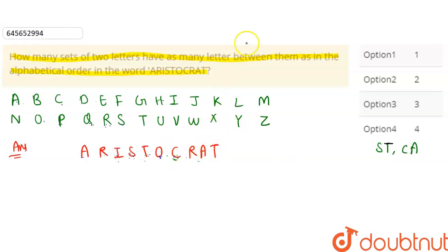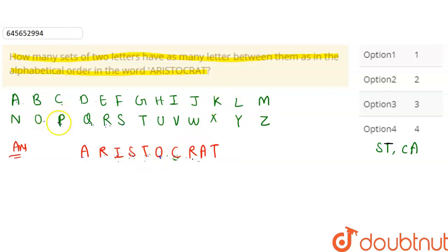Then check C and T — between C and T: two here — but more in the alphabet, so not matching. Now go to R — R and A: between them not matching. R-R — also not matching. Then check R and I — between R and I: one, two, three, four; here: one, two, three, four, five, six, seven, eight, nine — not matching. Then R-S — not matching. R-T — not matching.